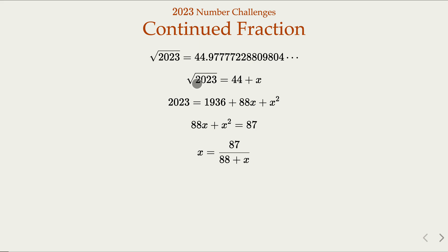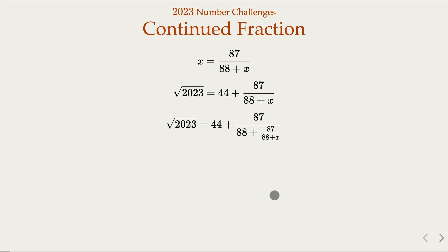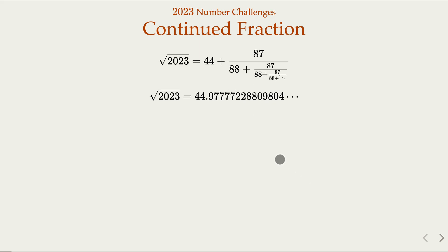Notice that the square root of 2023 is 44 plus x, so we substitute back into the expression. We get that 44 plus this whole thing equals x. Then you can argue that this x can be replaced by the fraction again, and you can continue to do this — it goes on forever. That's going to be the continued fraction for the square root of 2023.